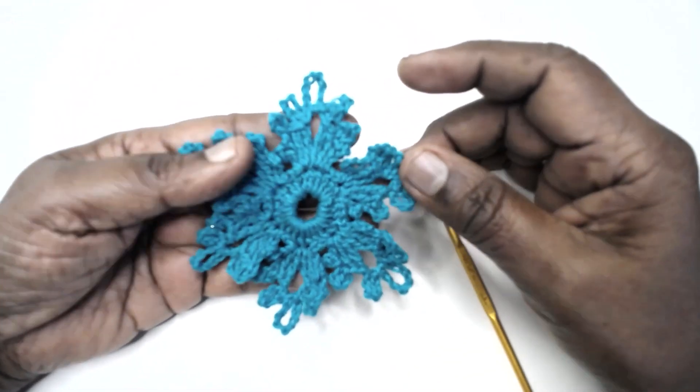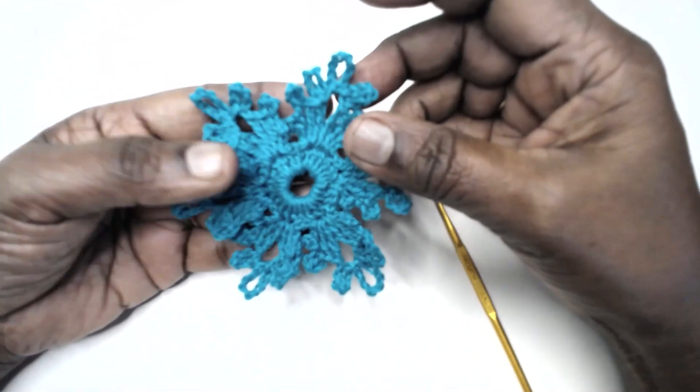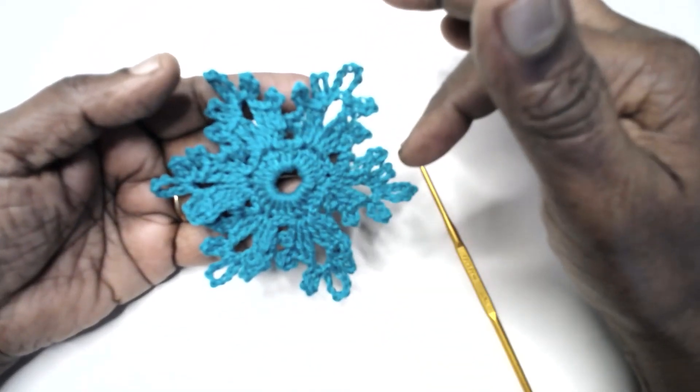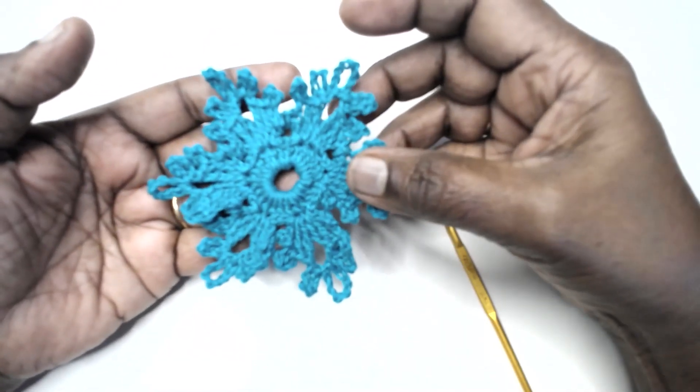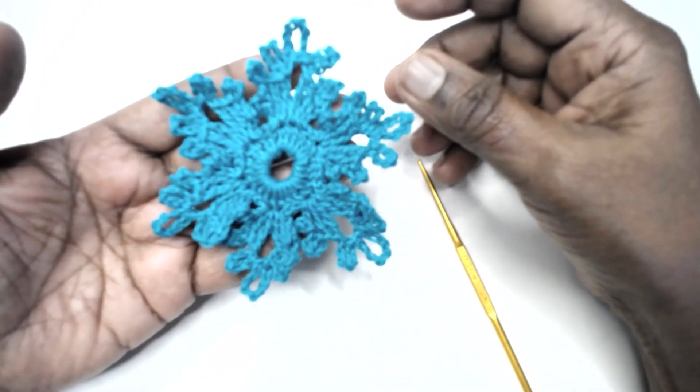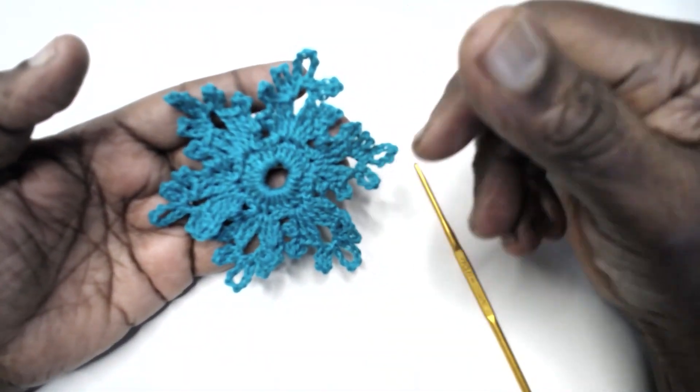This flower motif or flower flake is done in just two rounds and very quick to finish. When worked with fine yarns it gives a great effect.